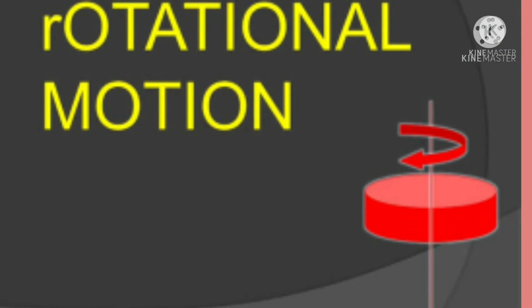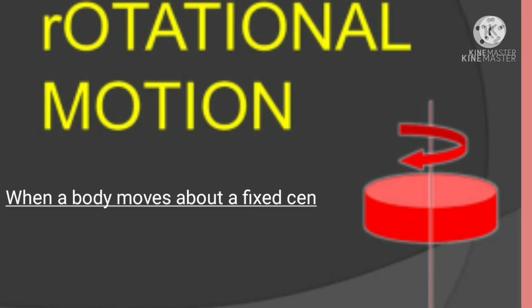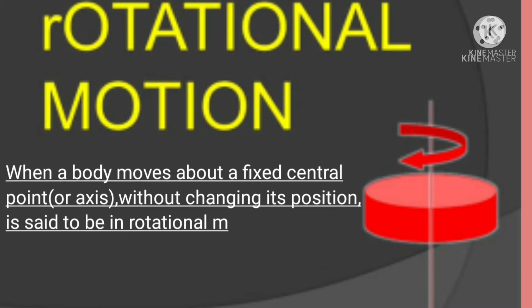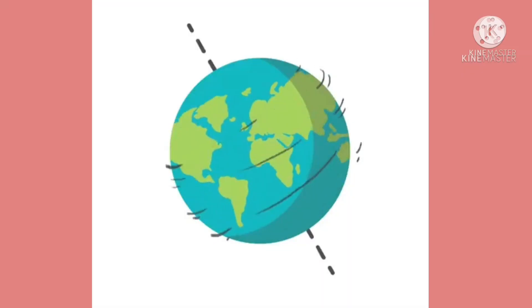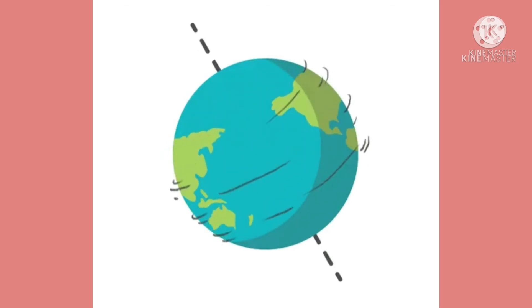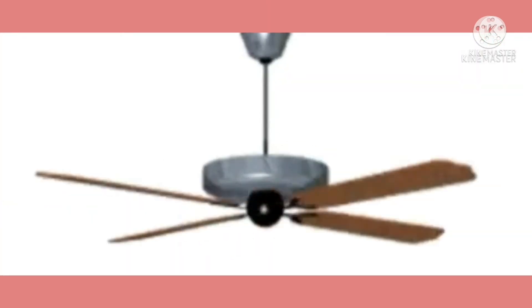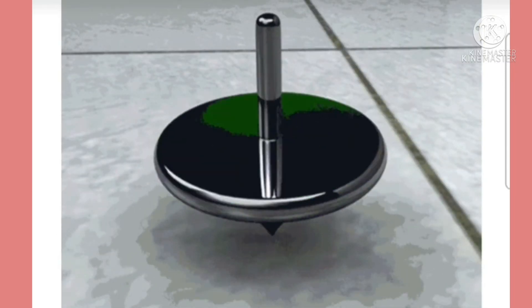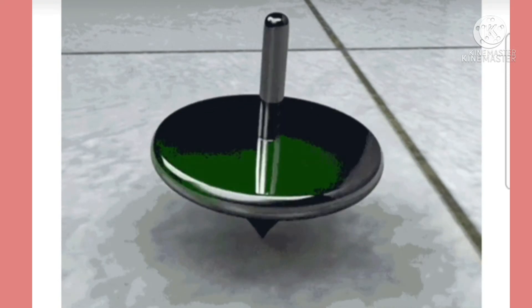Next, rotational motion. When a body moves about a fixed central point or axis without changing its position, it is said to be in rotational motion. Rotation of the earth about its axis, the motion of the blades of a fan, and a spinning top are some examples of rotational motion.